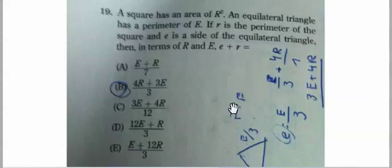Big E is the perimeter of the triangle, and so little e times 3 — little e is equal to big E divided by 3. Now, just combining those two formulas: small e plus small r. Well, it's small r divided by 4 plus big E divided by 3.